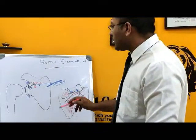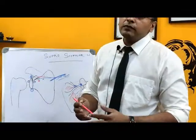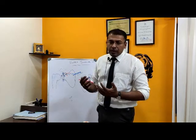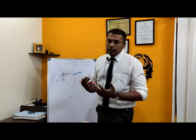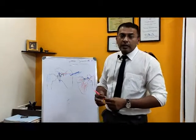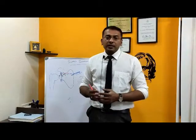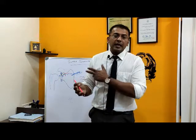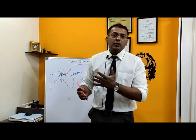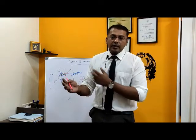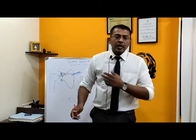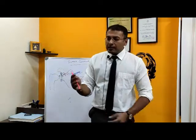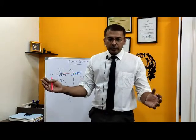The supraspinatus muscle is one of the main lifters of the shoulder and is part of the rotator cuff. The rotator cuff is a group of four muscles which help in moving the shoulder. We have the subscapularis in the front, which helps in rotation; the supraspinatus, which helps in lifting; and the infraspinatus and teres minor, which help in outward movements.